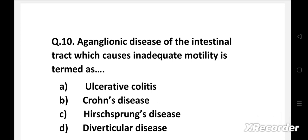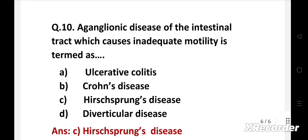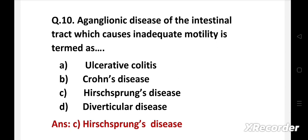Next question: an aganglionic disease of the intestinal tract which causes inadequate motility is termed as — option A: ulcerative colitis, B: Crohn's disease, C: Hirschsprung's disease, D: diverticular disease. The right answer is option C, Hirschsprung's disease. Aganglionic disease is a congenital defect of the intestinal tract which causes inadequate motility. The nerve supply is absent from parts of the intestine, therefore it is called aganglionic.